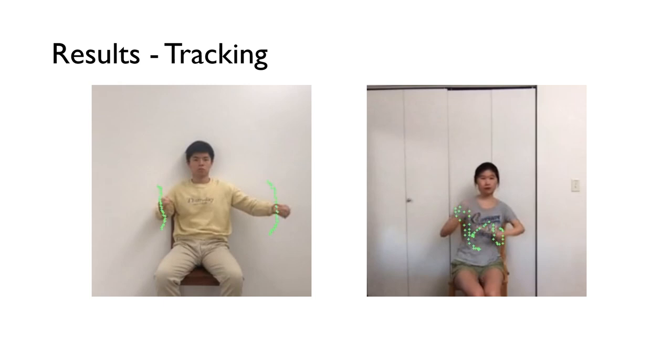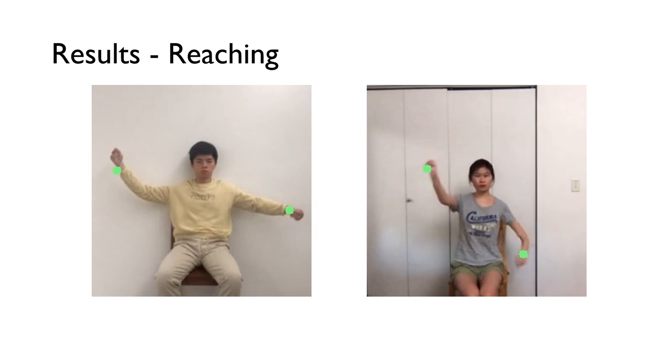Given an RGB image of a person and user-specified trajectories of the left and right wrist, our model can generate the video of the person tracking the trajectories. The person can also reduce to different target wrist positions specified by the user.